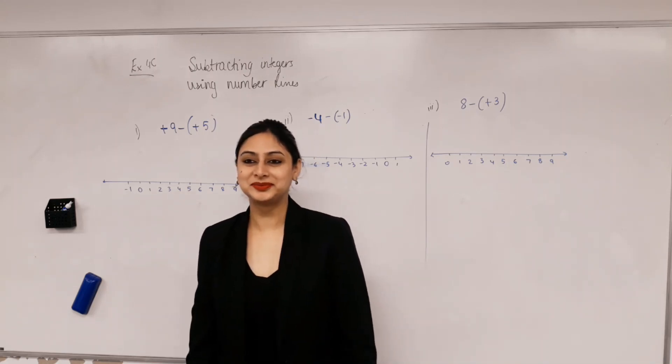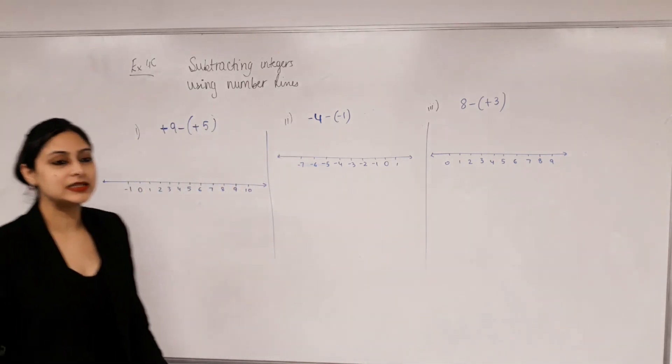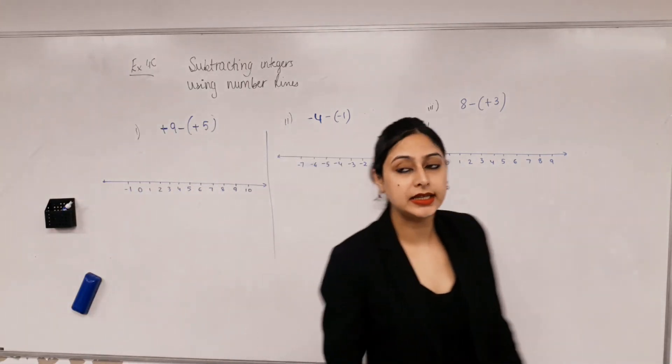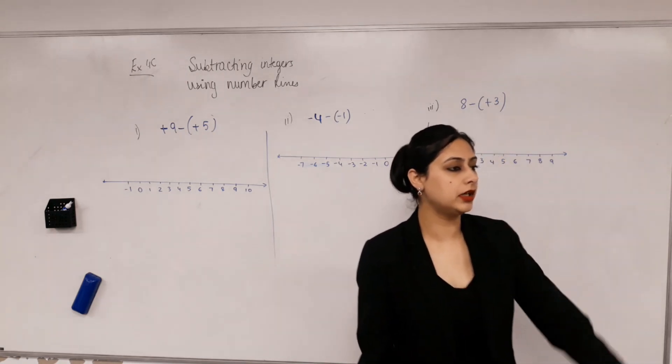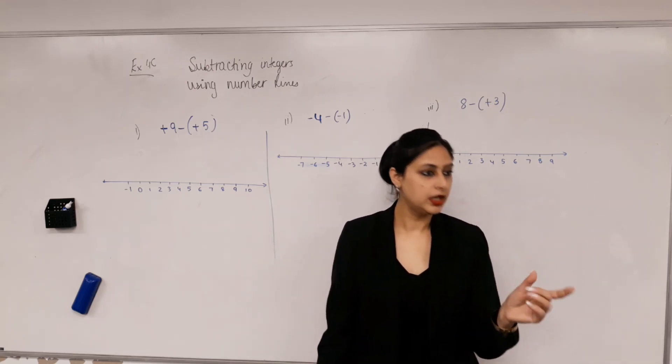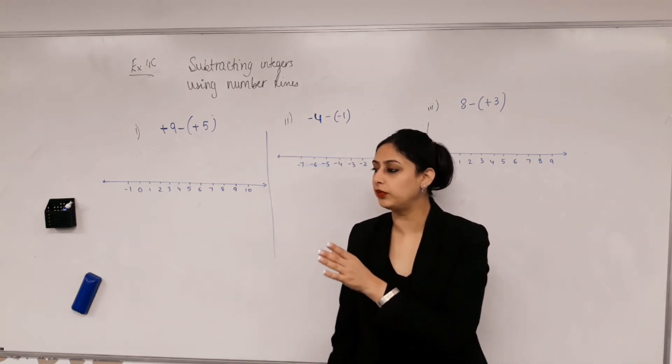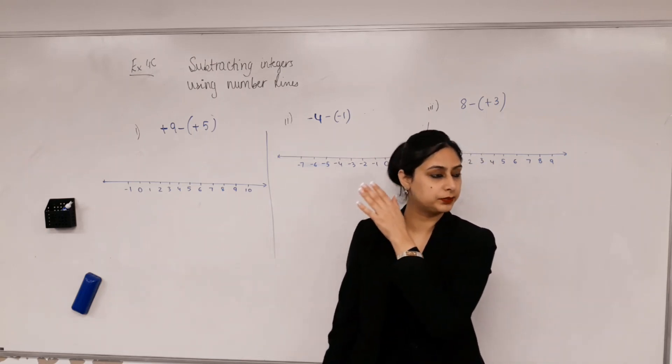Good morning gentlemen. Alright, subtracting integers using number lines. We did adding integers using number lines, yes? What did we do? We started with the first number and then we moved either right or left. If we were adding a positive number we moved to the right because numbers get bigger, and if we were adding a negative number we moved to the left.